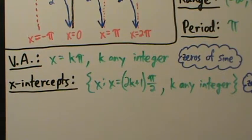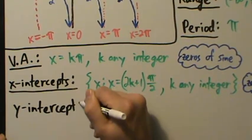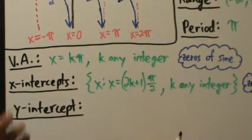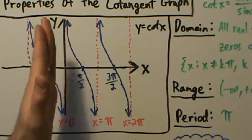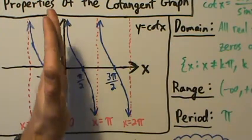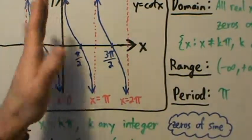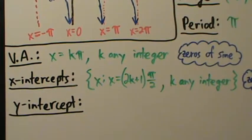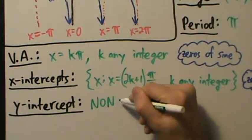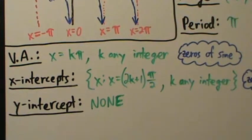So cotangent is zero whenever cosine is zero, and since cosine and sine are never zero at the same time, we don't need to worry about the denominator also being zero there. Zeros and x-intercepts are really the same thing. That covers x-intercepts. For y-intercepts: a function can have at most one y-intercept. Is this graph ever on the y-axis? No — x equals zero is a vertical asymptote, so there is no y-intercept.